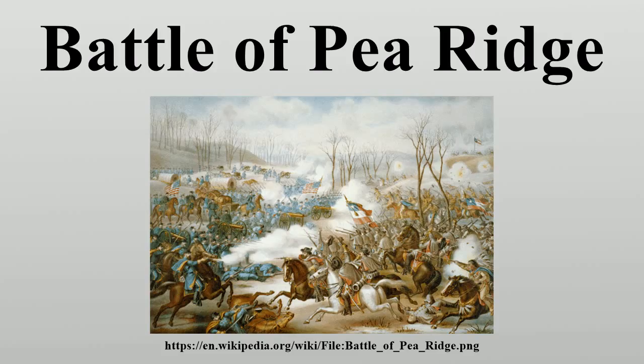Warned by scouts and Arkansas Unionists, Curtis rapidly concentrated his outlying units behind Little Sugar Creek. On March 6, William Van Dever's 700-man brigade marched a remarkable 42 miles in 16 hours from Huntsville to Little Sugar Creek. Curtis' right flank suffered from the mistake of his second-in-command, Sigel, who sent a 360-man task force to the west, where they would miss the next three days of fighting. Sigel also withdrew cavalry patrol from the road on which the Confederate Army was advancing. However, Colonel Frederick Schaefer of the 2nd Missouri Infantry, on his own initiative, extended his patrols to cover the gap.